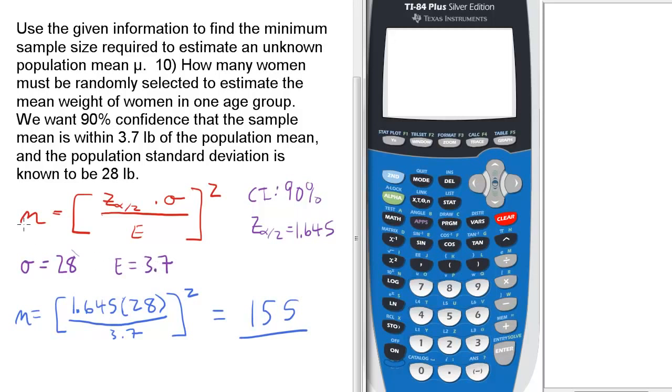So in the red we have the equation n equals z alpha over 2 times sigma over e, the whole quantity squared. In blue here are the numbers: 1.645 times 28 divided by 3.7, quantity squared.